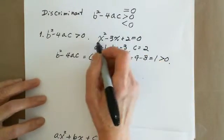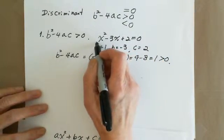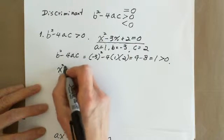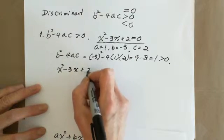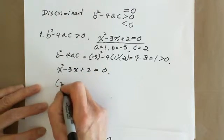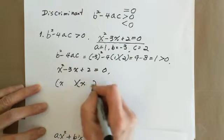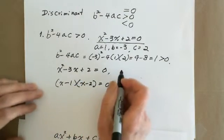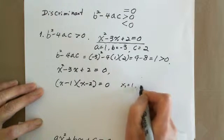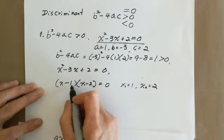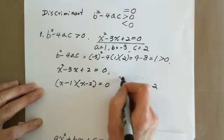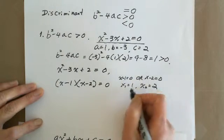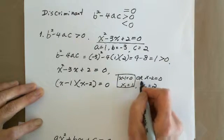So in this situation we have two solutions. We can use the factoring method: x squared minus 3x plus 2 equals zero factors as (x minus 1)(x minus 2) equals zero, giving x₁ equals 1 and x₂ equals 2.